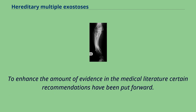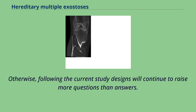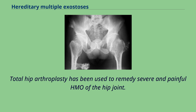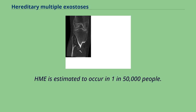To enhance the amount of evidence in the medical literature, certain recommendations have been put forward. The construction of well-designed prospective studies that can provide a clearer relationship between surgical procedures, patient characteristics, and outcomes is in high demand; otherwise, current study designs will continue to raise more questions than answers. Total hip arthroplasty has been used to remedy severe and painful HMO of the hip joint, though it is challenging because of distorted anatomy and repeated prior surgeries. HMO is estimated to occur in 1 in 50,000 people.